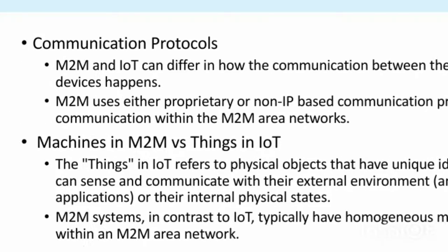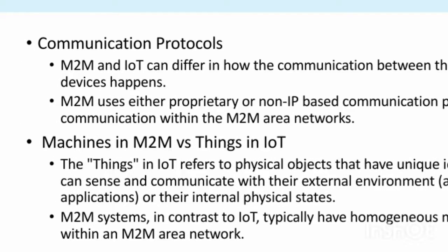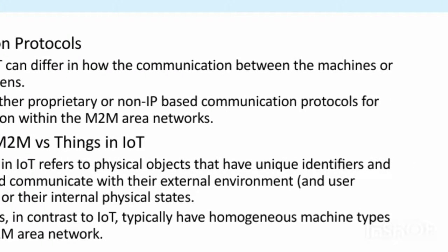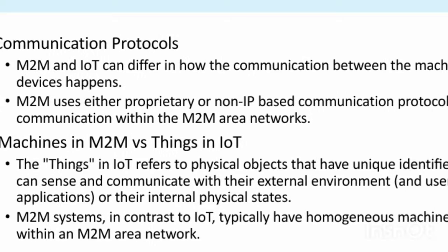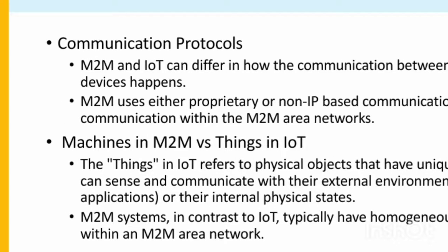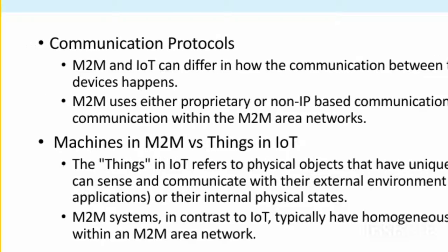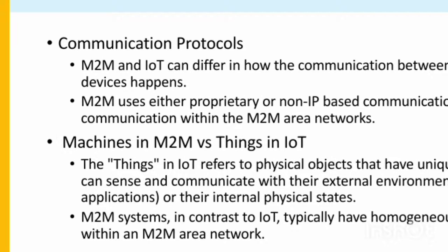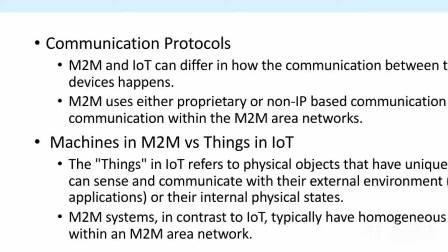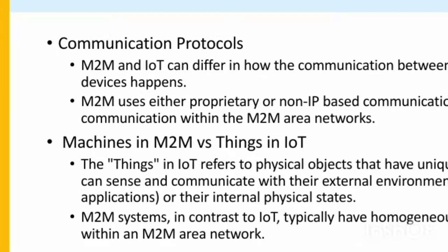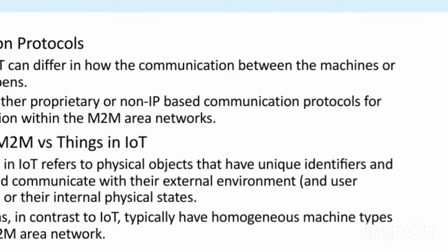Machines in M2M versus things in IoT: The things in IoT refers to physical objects that have unique identifiers and can communicate with their external environment or reflect their internal physical states. M2M systems, in contrast to IoT, typically have homogeneous machine types within an M2M area network.